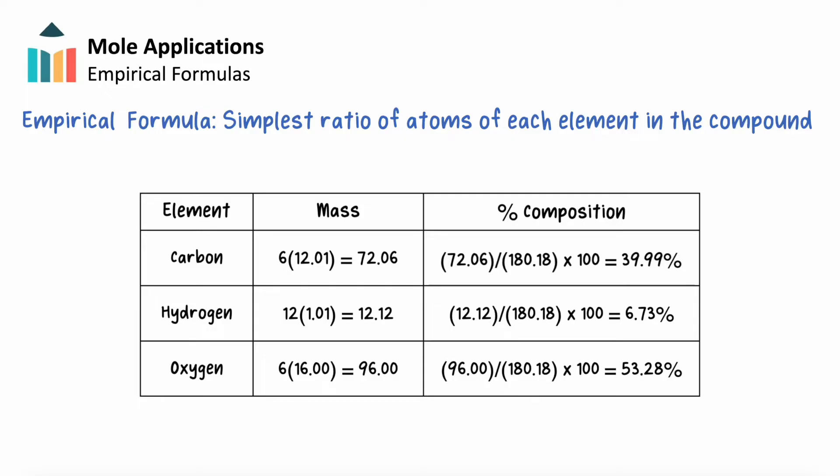We can total up our values to check our work. The total masses of the atoms of each element add to the molar mass of glucose, and the percent composition of each element adds to 100%. In the lab, we can use the mole concept along with percent composition to determine an empirical formula of an unknown compound.